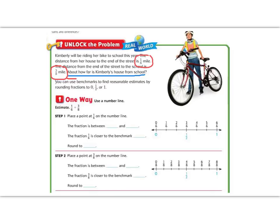You can use benchmarks to find reasonable estimates by rounding fractions to 0, 1/2, or 1. Let's use a number line to practice this. First, we're going to plot 1/6 on the number line, and you can see it's already been cut into 6 parts, so 1/6 would be right here. 1/6 is between the benchmarks 0 and 1/2, and if you look, it is closer to 0 than it is to 1/2, so we're going to round that to 0.